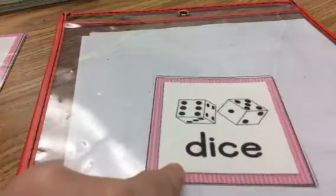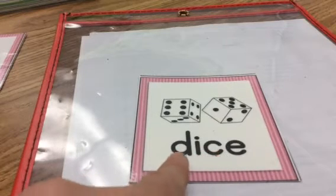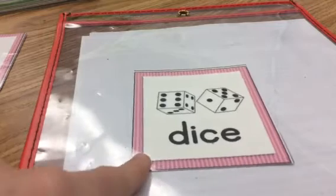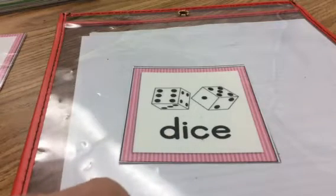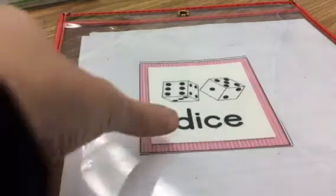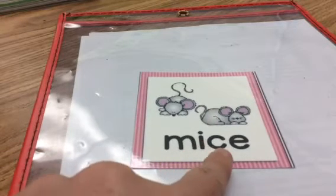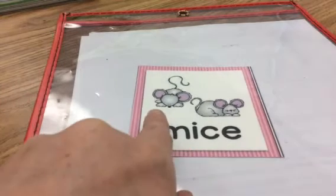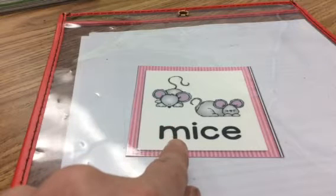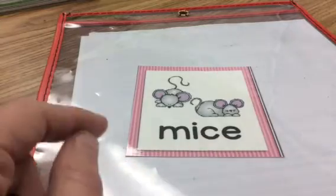You might use these if you're playing a game. This is D-ice — dice. If you play the game of Yahtzee, you have to use five dice. What's this word? Good job. If you have these in your house, they might make a squeaky noise: M-ice. So if it's just one, we say mouse, but if it's more than one, we say mice. What's this word?